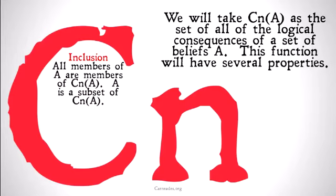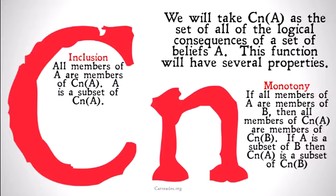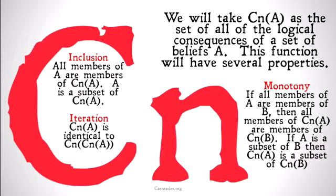Inclusion is going to be one of the properties of our consequence operator — all members of A are members of the consequences of A; A is a subset of Cn(A). It's also going to have monotony: if A is a subset of B, then Cn(A) is a subset of Cn(B). And it's also going to have iteration: Cn(A) is identical to Cn(Cn(A)), because the consequences of A include all logical consequences and doing the operation more than once is simply superfluous.